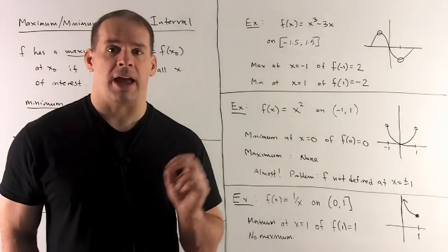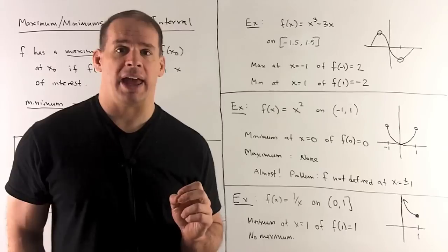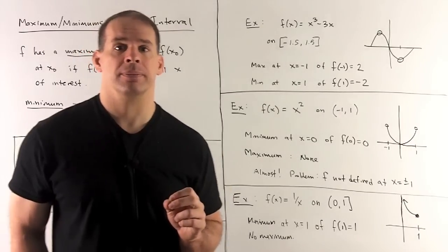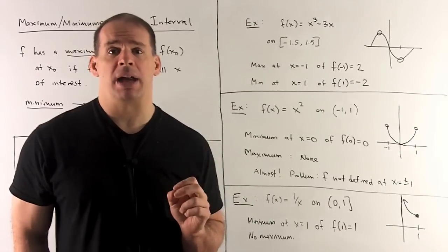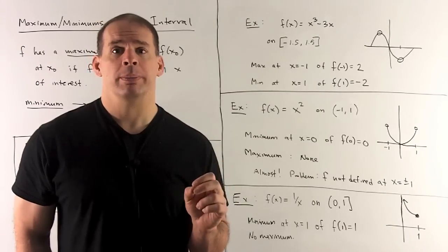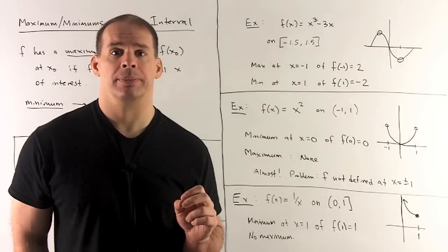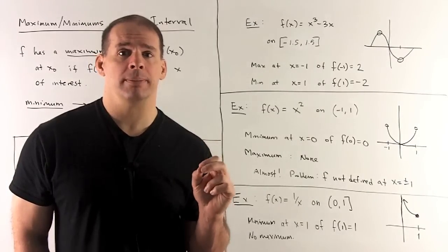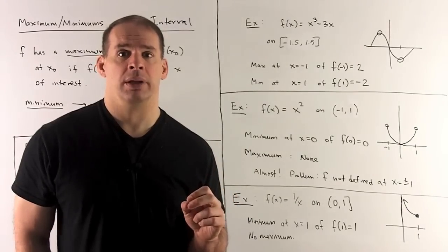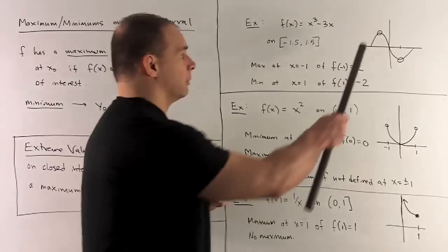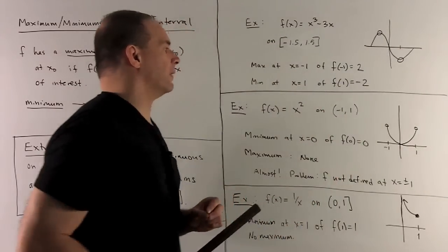First example: f of x equal to x cubed minus 3x on the interval minus 1.5 to 1.5. We have a maximum at x equal to minus 1 with value f of minus 1 equal to 2. For the minimum, that happens at x equal to 1 with value f of 1 equal to minus 2. Looking at the graph, that's just this maximum peaked up there and the minimum at the bottom of the trough.